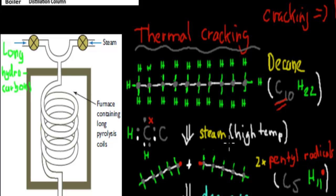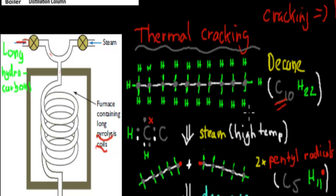So what we do is we put decane in here — long hydrocarbons — and on the other end we put steam. What happens is they both go down this coil, it's called a pyrolysis coil, and they go down this coil. What happens there is it actually gets broken down into smaller bits. The steam has to be at a certain temperature — about 750 degrees Celsius.